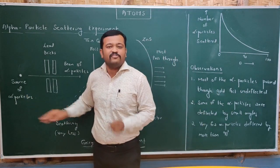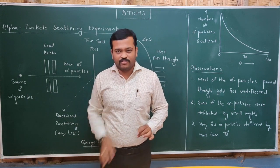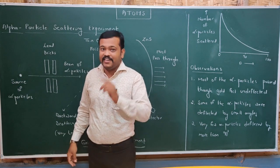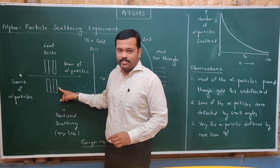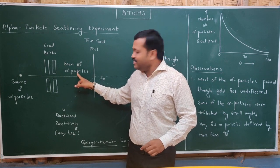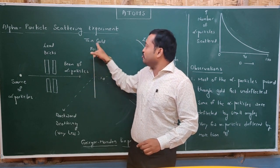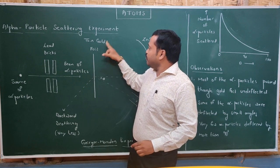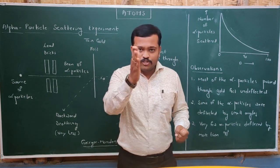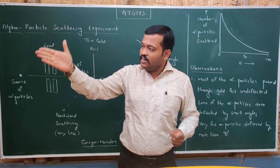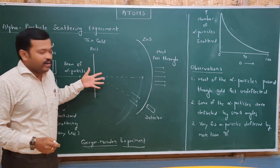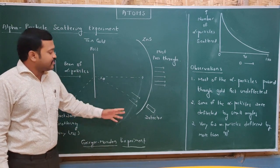The experimental setup was like this: they took a source which emitted alpha particles from bismuth, and alpha particles were emitted in all directions. They needed to be collimated in a single direction, so they used lead bricks. Through the lead bricks, alpha particles were collimated in a single direction, and these particles were meant to fall on a thin gold foil. They used gold because gold is highly malleable and can be drawn into very thin sheets.